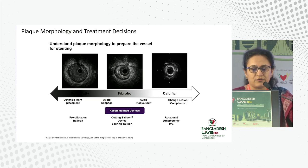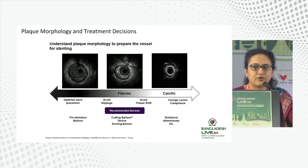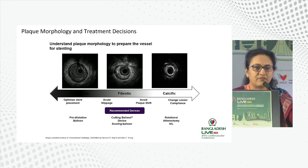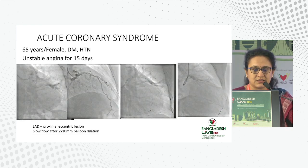Depending on the morphology, different strategies have been advised: if it's a lipidic plaque, go for direct stenting; for a calcific lesion, you have to use different devices — both on OCT and IVUS basis.